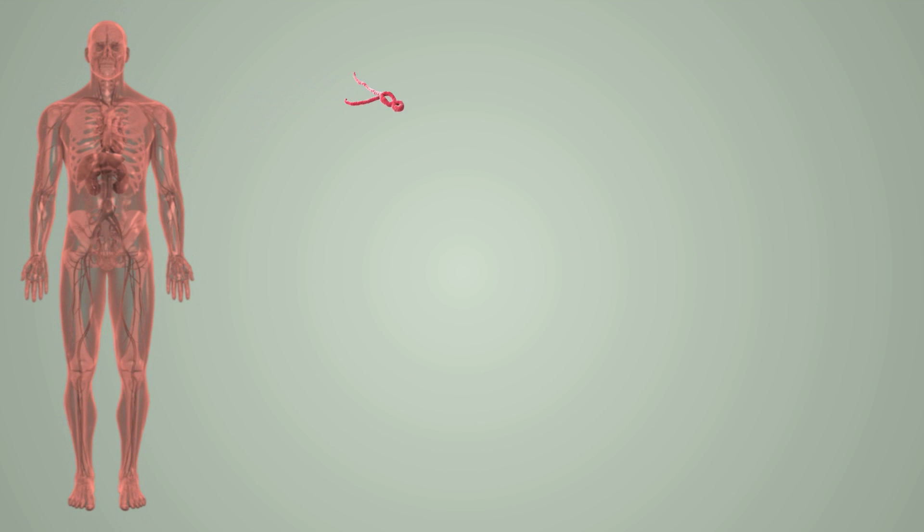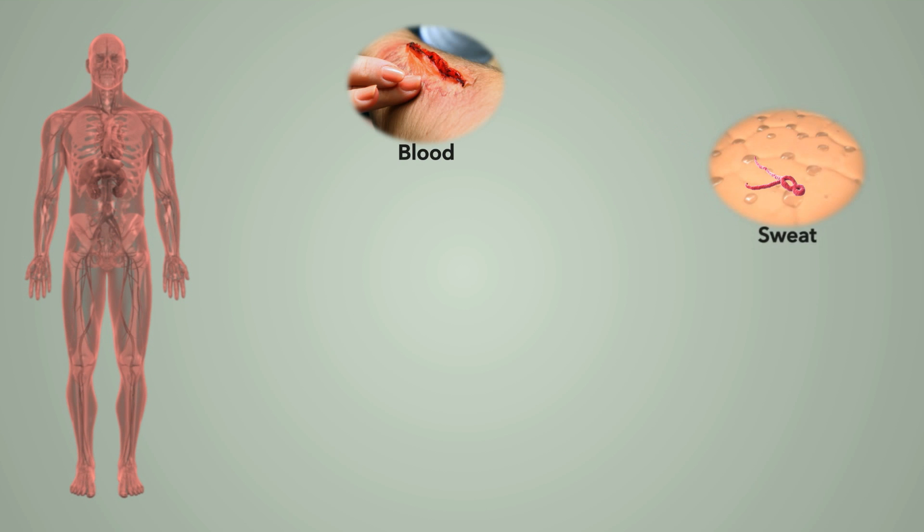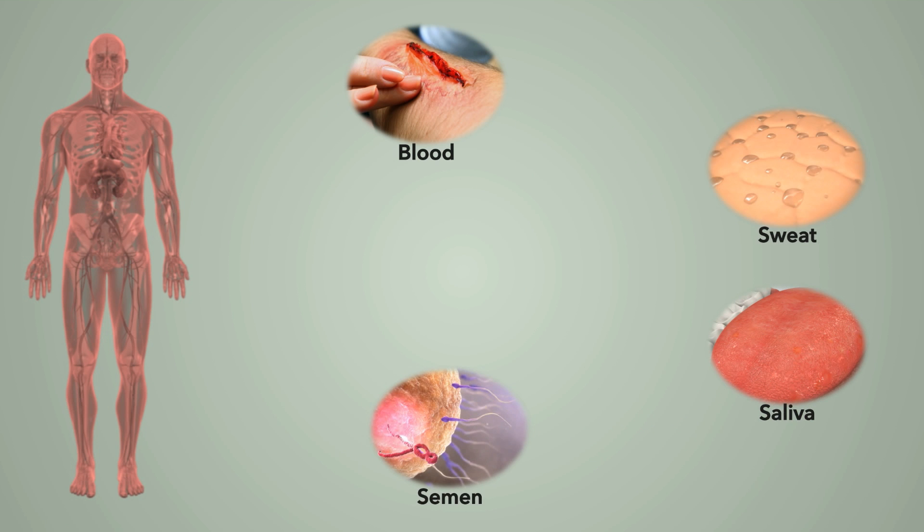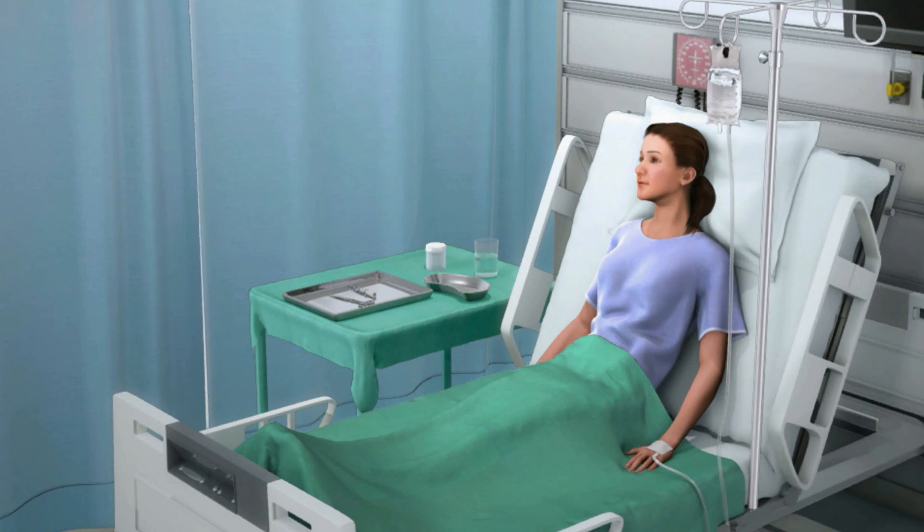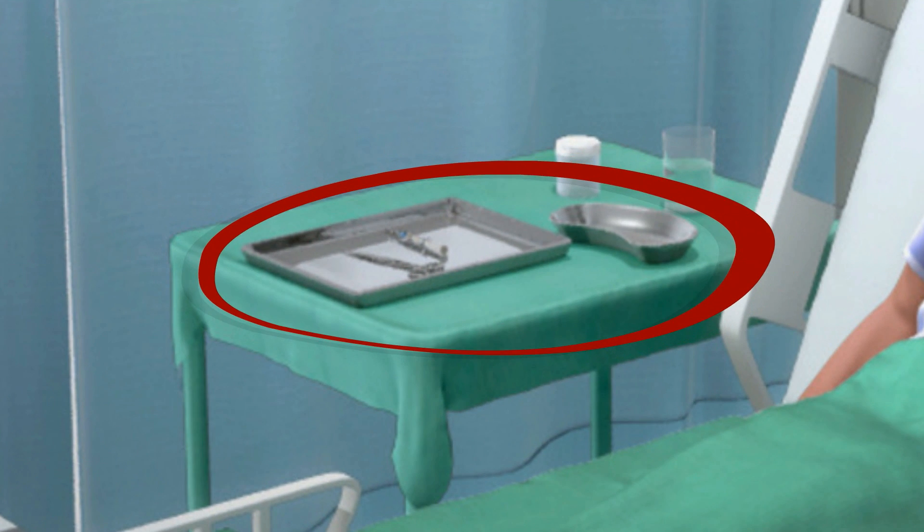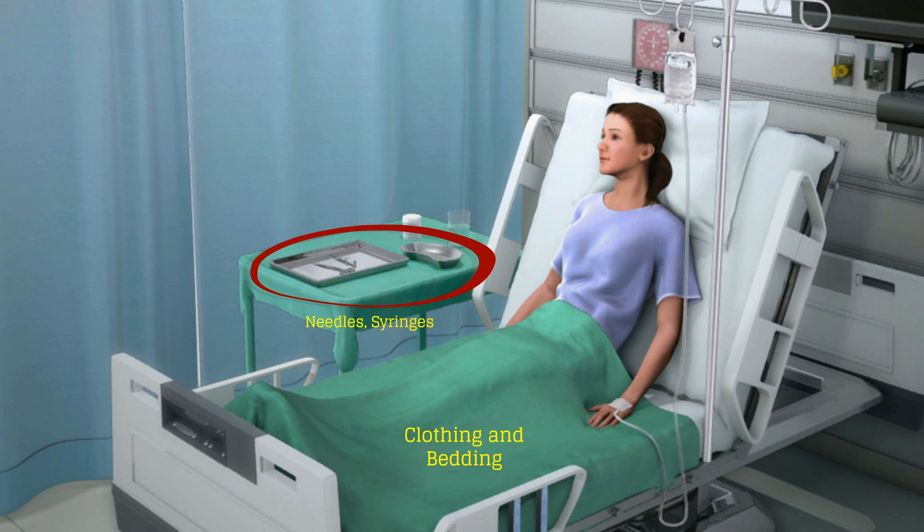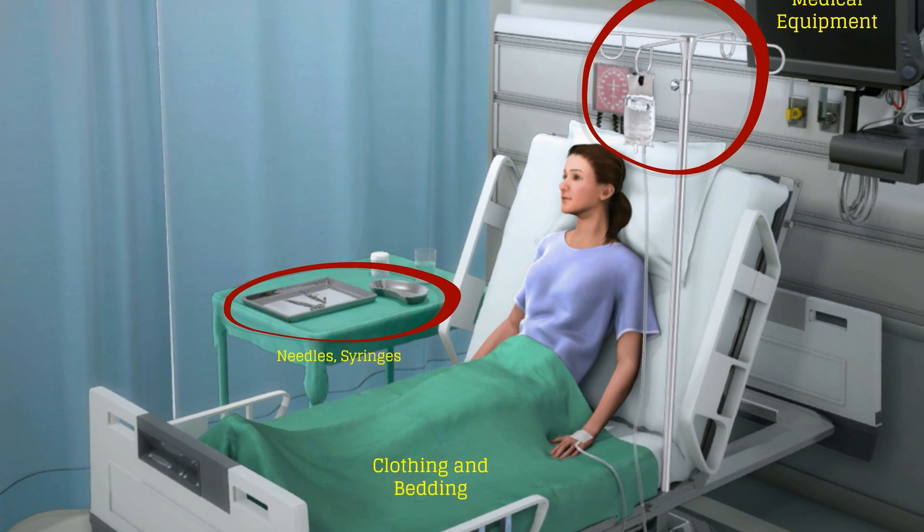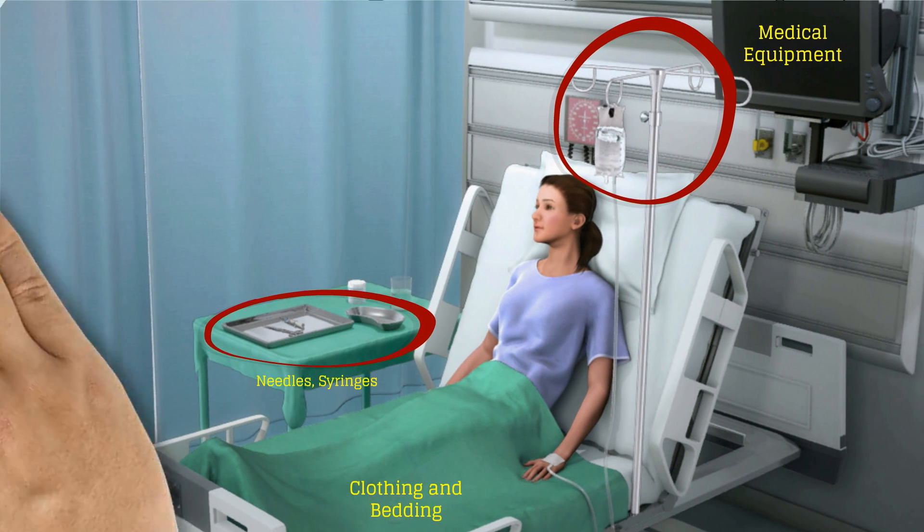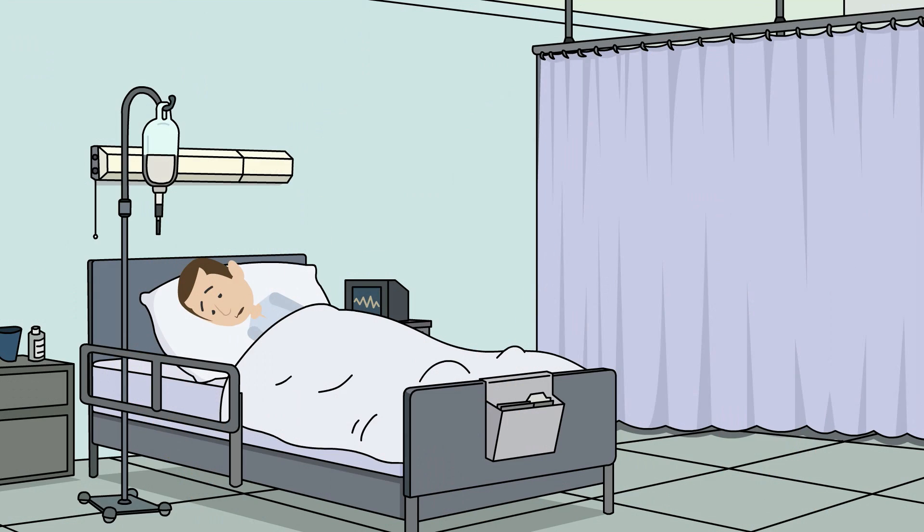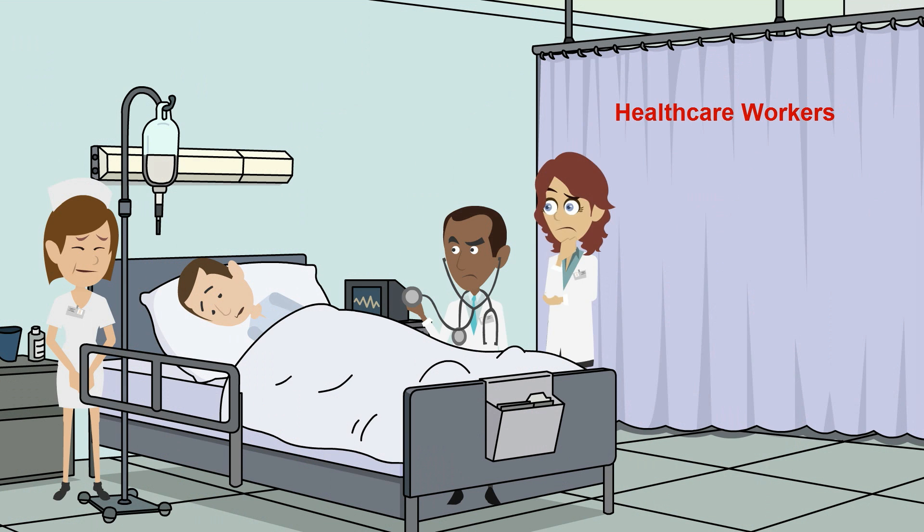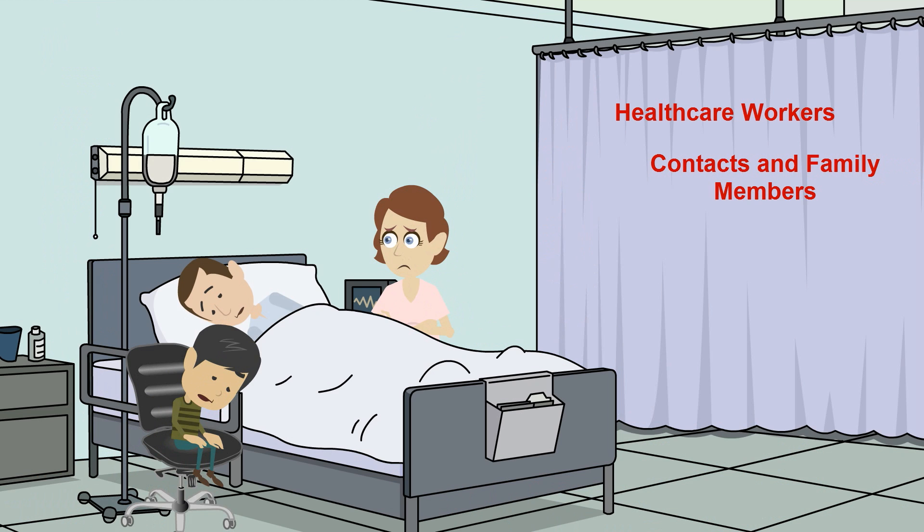Ebola then spreads from human to human via direct contact with the blood or bodily fluids of an infected symptomatic person, or indirectly through exposure to objects such as needles, clothing and bedding, or medical equipment that have been contaminated with infected secretions. Since the mode of transmission is such, people most at risk are healthcare workers, contacts and family members of the patients, and mourners.